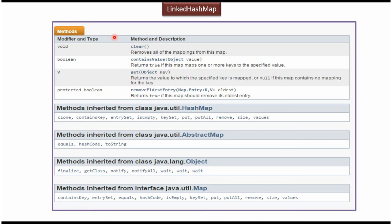Here you can see the methods supported by LinkedHashMap. To add a key and value we have the put method. To get the value for a corresponding key we have the get method. To remove a key-value pair we have the remove method. To check whether a particular key is present we have the containsKey method. To check whether a particular value is present we have the containsValue method. To check the size we have the size method, and to check whether it is empty we have the isEmpty method.